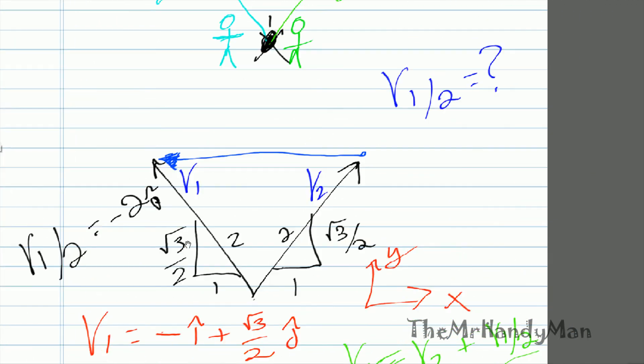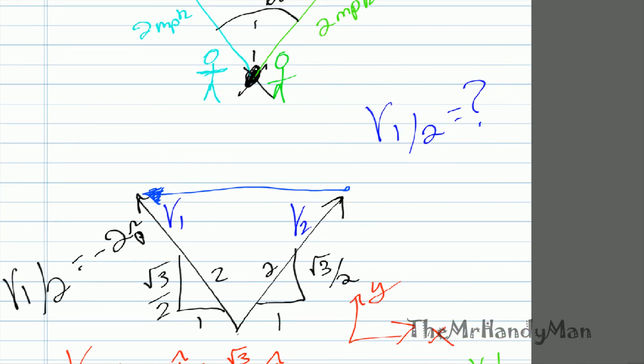And let's see if that makes sense. Negative 2i, if we look in red right here, going from this point at the end of v2, negative 2 over to the peak of the other vector. This is negative 2i, and therefore, it is v1 relative to 2.